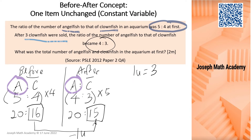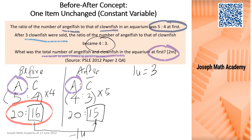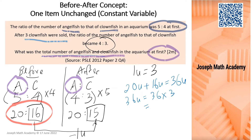In the question, we are asked to find the total number of angelfish and clownfish at first. At first, we have 20 units of angelfish plus 16 units of clownfish, giving 36 units total. Since 1 unit equals 3 clownfish, 36 units equals 36 times 3, which gives us 108.